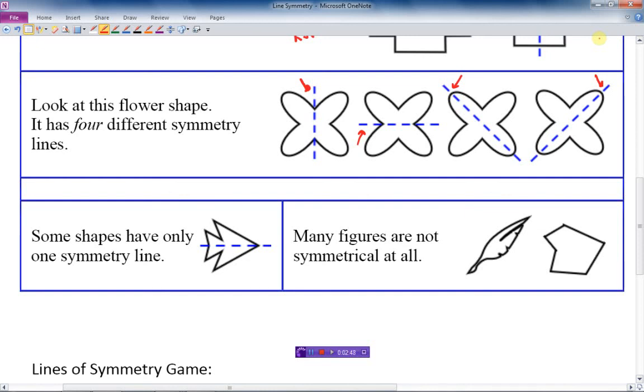Some shapes have only one symmetry line, as shown with this arrow. But many shapes are not symmetrical at all. These shapes here—it doesn't matter where I draw the line, it's not going to give me an exact representation of the other half.